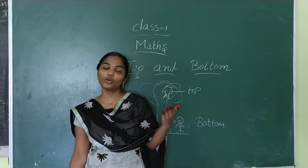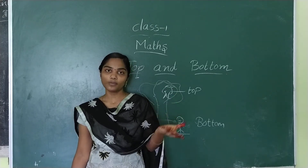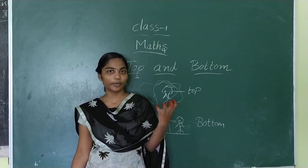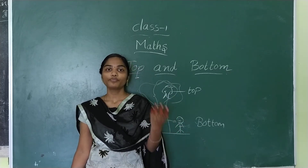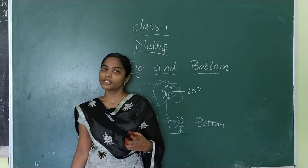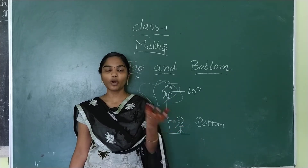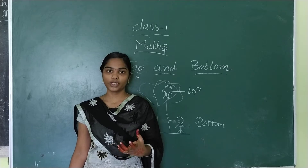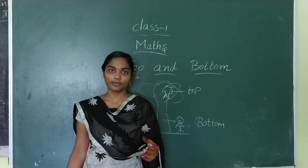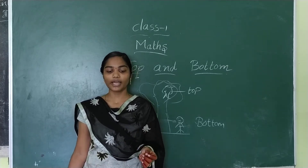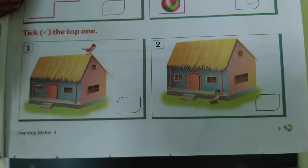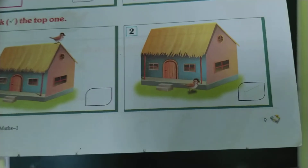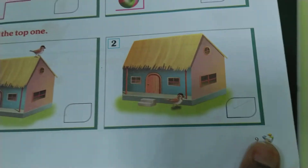Top means the object that is on top. Bottom means the object that is on the bottom. Also, open page number 9. Look at here — this is page number 9.